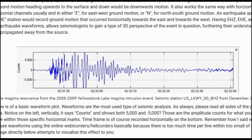Waveforms are a very important aspect of seismological analysis. They can assist you in determining magnitudes, epicenters and hypocenters, earthquake types, different types of processes, and much more. I am not going to show you how to read waveforms specifically, but instead waveform plots. Waveform plots are also sometimes called seismogram plots. A seismogram is simply a line of data that was recorded by a seismic instrument, also known as a seismograph.